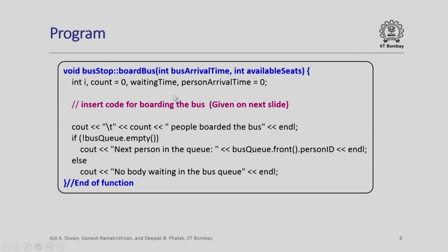Next is the more complex board_bus function, which implements the boarding of the bus. This function has two parameters: the bus arrival time and the number of available seats in that bus. We initialize some variables at the beginning, such as count = 0 and person_arrival_time = 0. The code for actually boarding the bus is given on the next slide — here I am just describing the overall structure of this board_bus function.